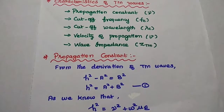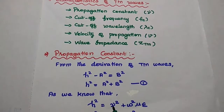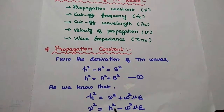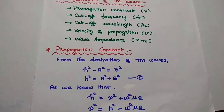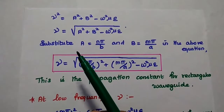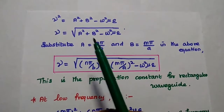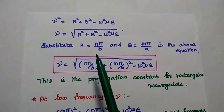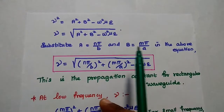As we know, H squared is also equal to gamma squared plus omega squared mu epsilon. From this we can get the value of gamma. Gamma squared is equal to H squared minus omega squared mu epsilon. Substituting the first equation, H squared equals A squared plus B squared, we get gamma squared is equal to A squared plus B squared minus omega squared mu epsilon. Taking square root on both sides, gamma is equal to square root of (A squared plus B squared minus omega squared mu epsilon). We have already obtained the values of A and B in the TEM field equations derivation part, and we can directly use those values here.